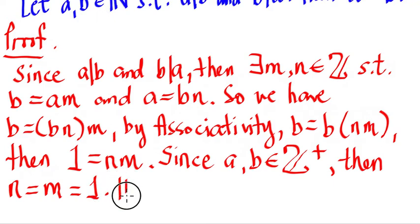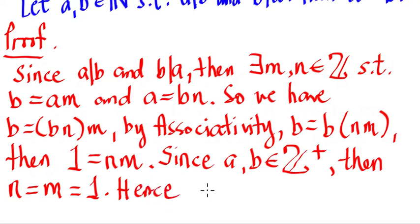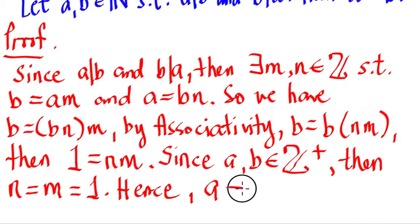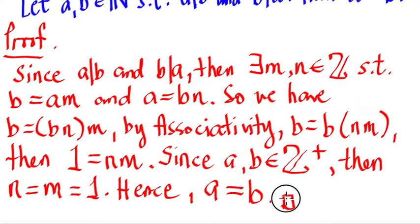Hence, since n is equal to 1 and m is equal to 1, we can use either of these equations. If m is equal to 1, then b equals a times 1, so a is equal to b — or equivalently, b is equal to a. This is the end of the proof. That's our proof for Theorem 1.